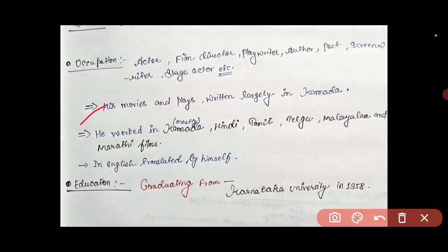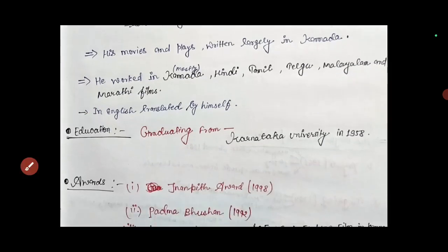His movies and plays were largely written in Kannada. Girish Karnad knew multiple languages like Kannada, Hindi, Tamil, Telugu, Malayalam, and Marathi. Mostly he worked on Kannada language films. When his work was written in different languages like Tamil and Telugu, he would translate his own work into English.